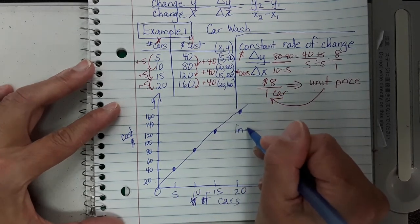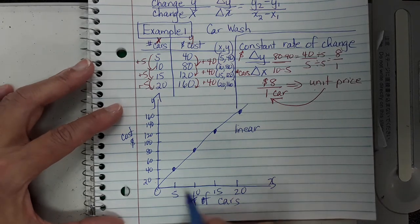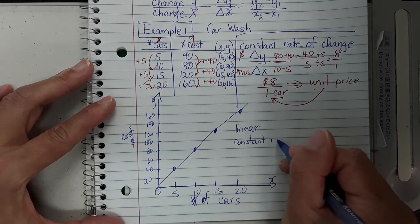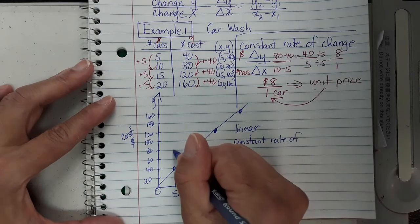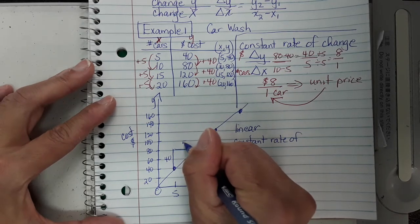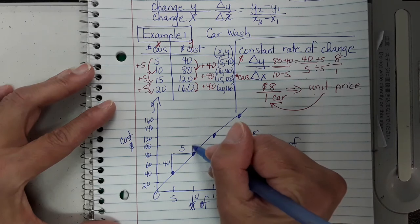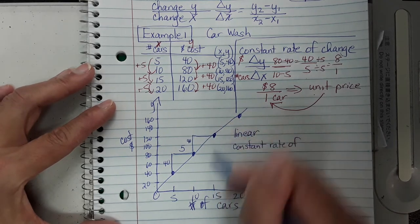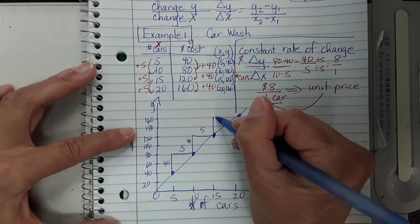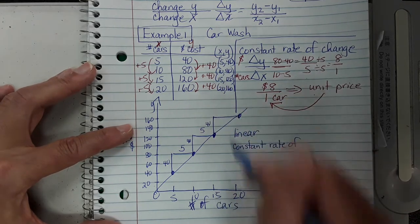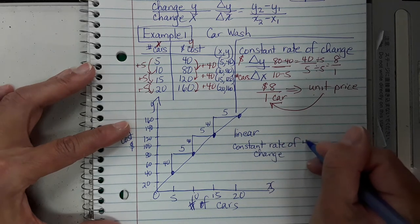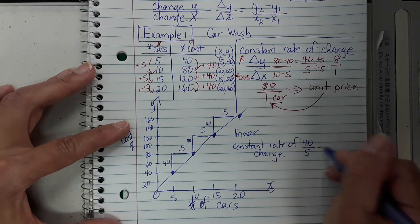Notice that when we look at this constant rate of change, it doesn't matter which two points we choose — it's always constant. I'm going up 40 and over 5 between any two consecutive points. From 120 to 160 is up 40, and from 15 to 20 is over 5. So the constant rate of change is 40 over 5, which is 8 over 1.